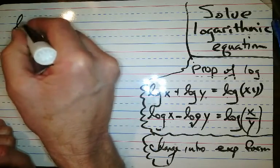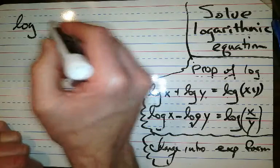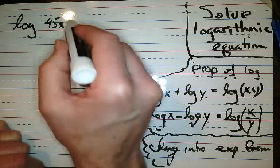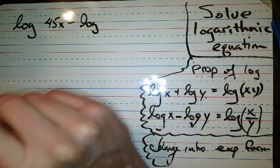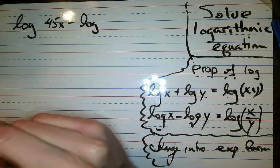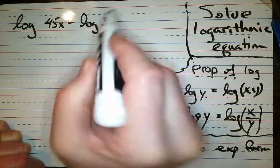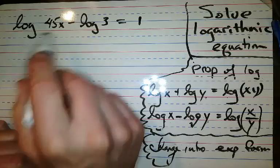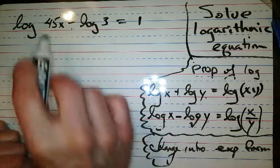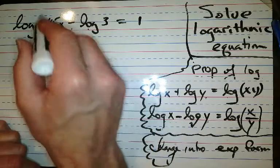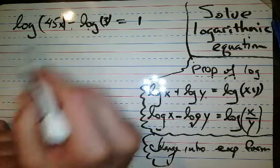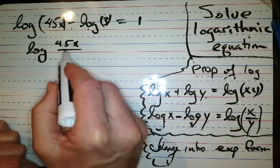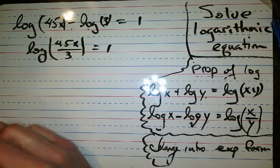How about the log of 45x minus the log of 3. And that equals one. So we got subtraction, we know subtraction. Log subtraction means a fraction, right? So we're going to have log of 45x divided by 3 equals 1. Yay!